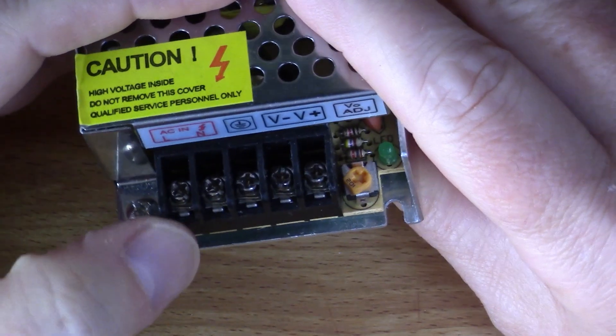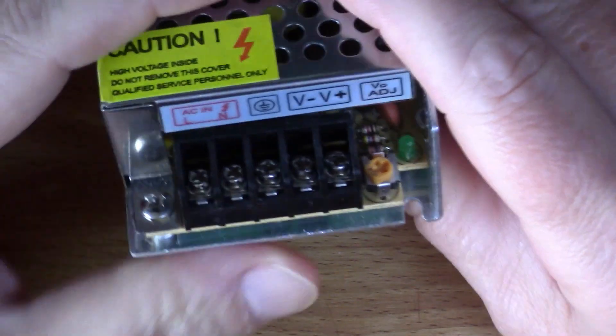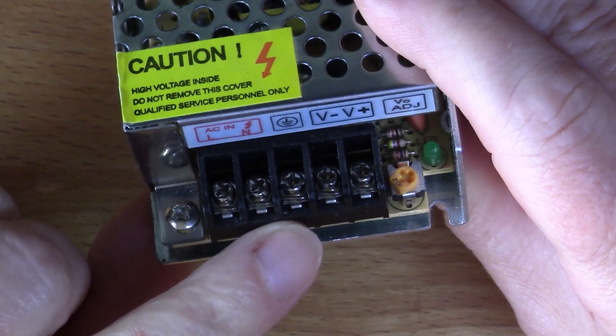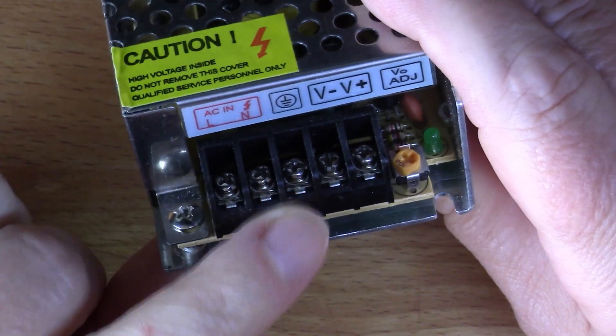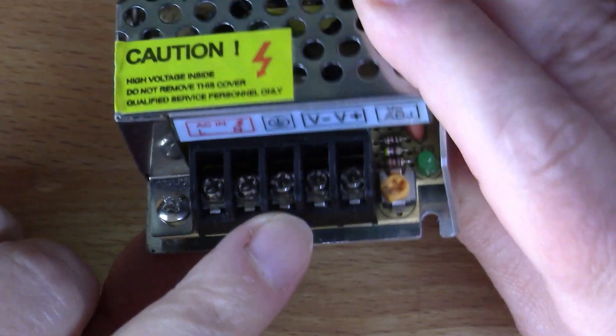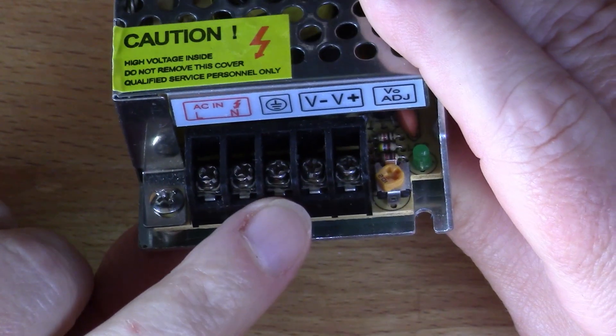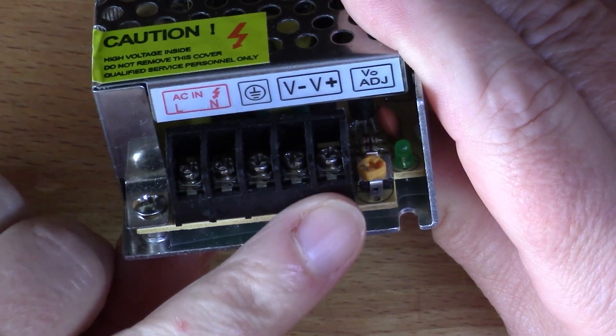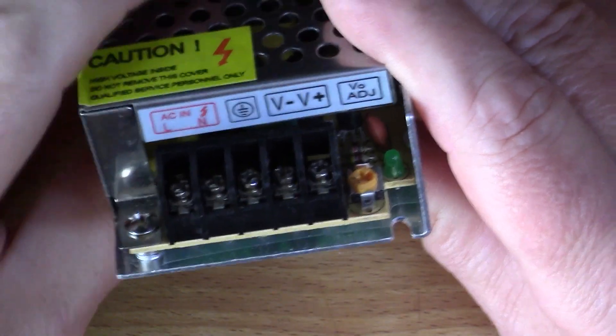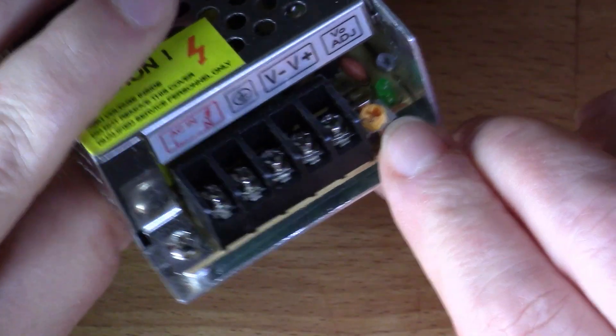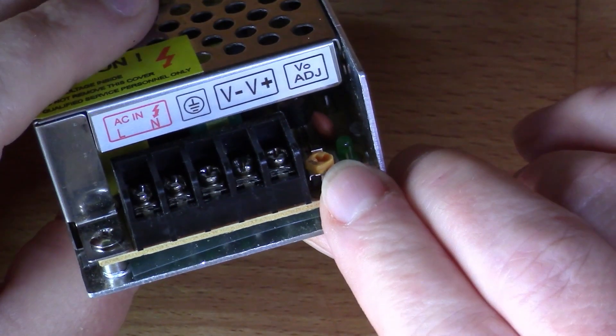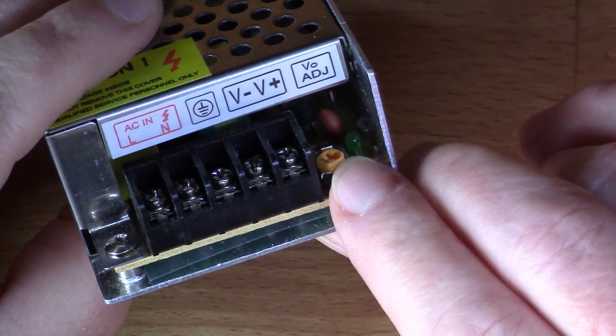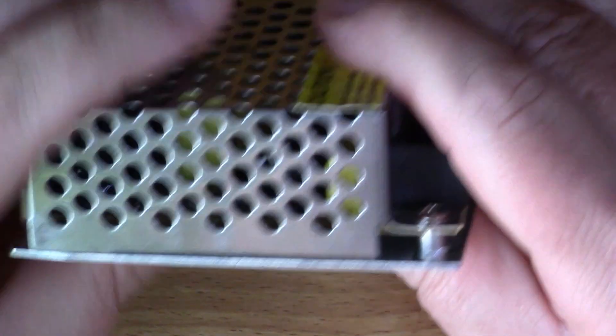We've got all the connectors at one end, so we've got the live and neutral coming in from the mains here, a ground pin protective ground, and then V minus and V plus which gives us our output. There's also an adjuster here, so I might experiment with that and see what range of voltage you can adjust this to.